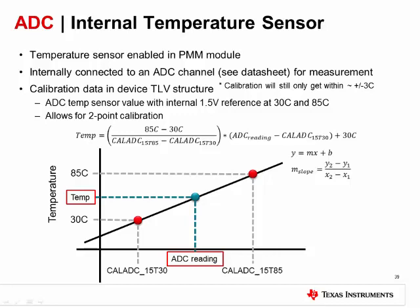There are calibration constants in the device TLV structure that can be used with the internal temperature sensor to get a more accurate reading within a few degrees of the actual temperature. These calibration values are generated per unit at production. The measurement on the ADC is taken in a temp chamber at 30°C and 85°C using the internal reference, and then these two values are stored in the TLV area. You can then use these values to do a two-point calibration. You plot these two points on a graph of temperature versus ADC readings, then find the equation for the line between two points. This is in the form Y = MX + B, where M, the slope, is found by subtracting the two temperatures and dividing by the difference in the ADC readings, and the offset B is 30°C because we are passing through the 30°C point. When you take a reading on the ADC temperature sensor in an application, you plug the ADC reading into the equation as X to calculate the corresponding temperature value.